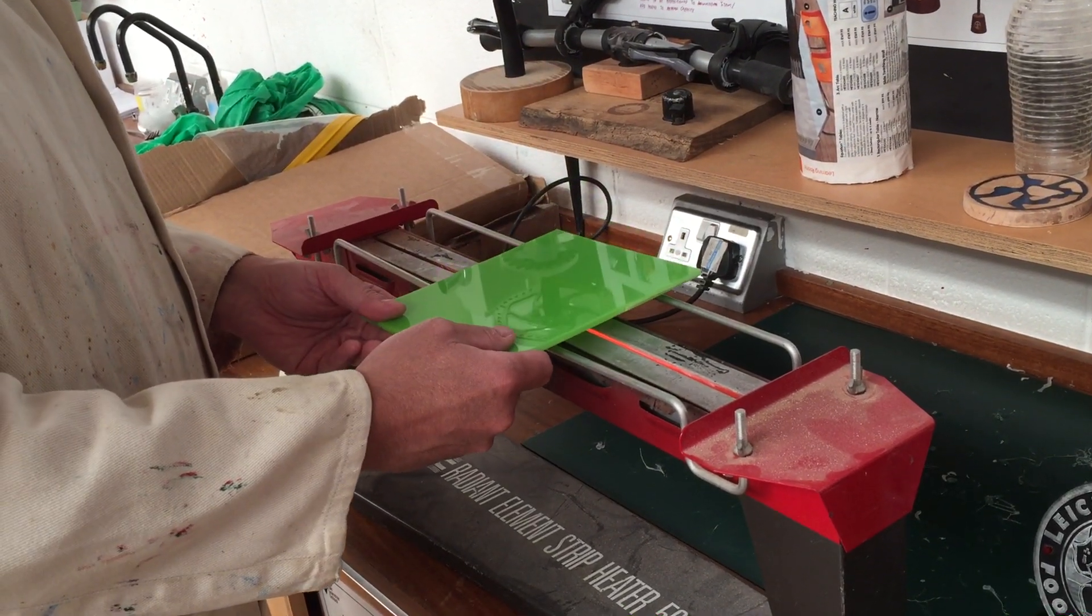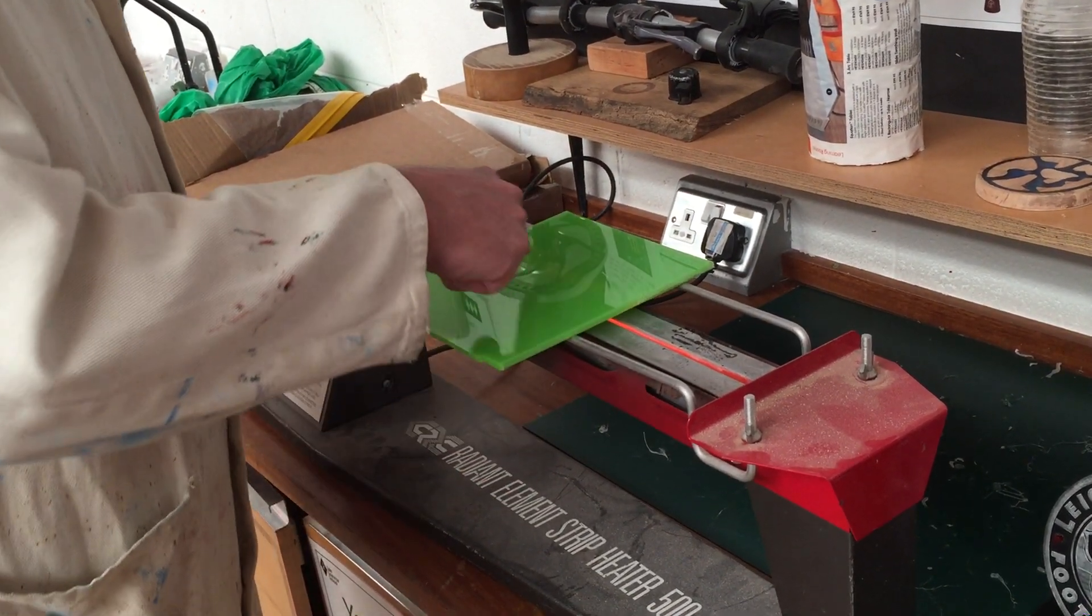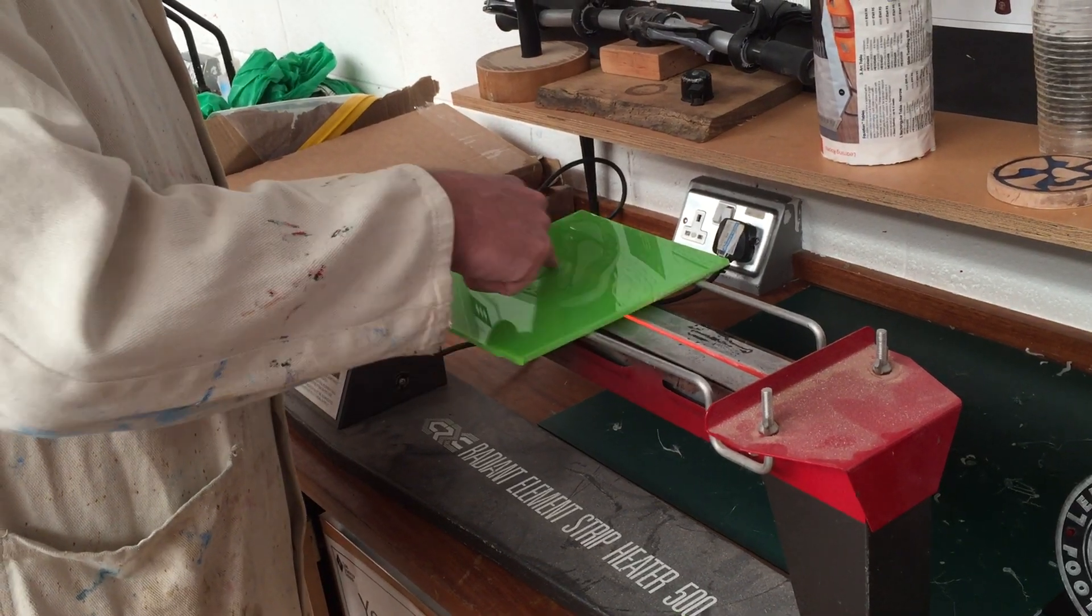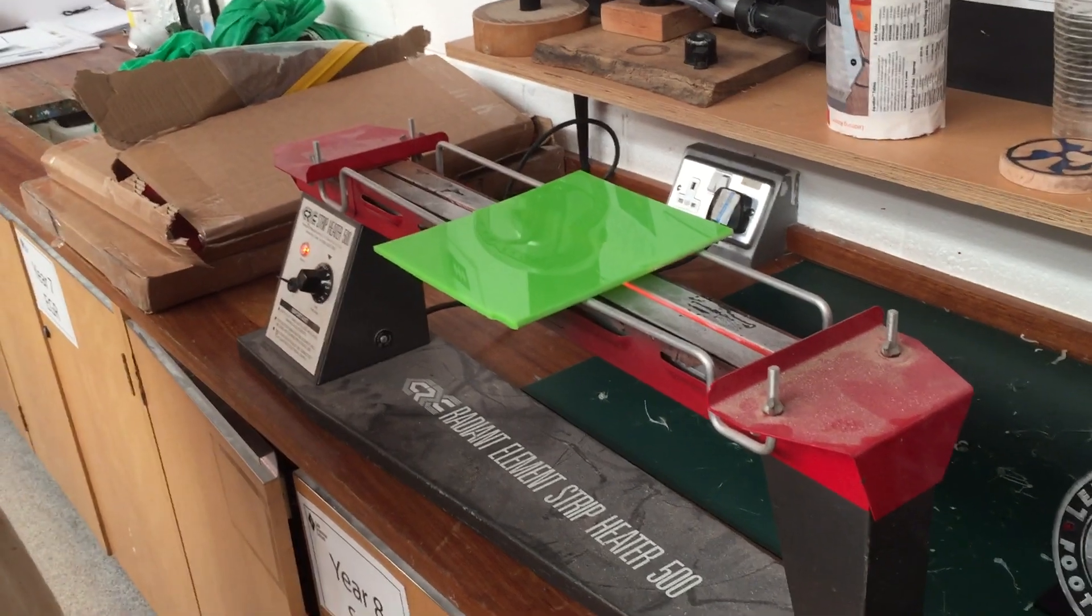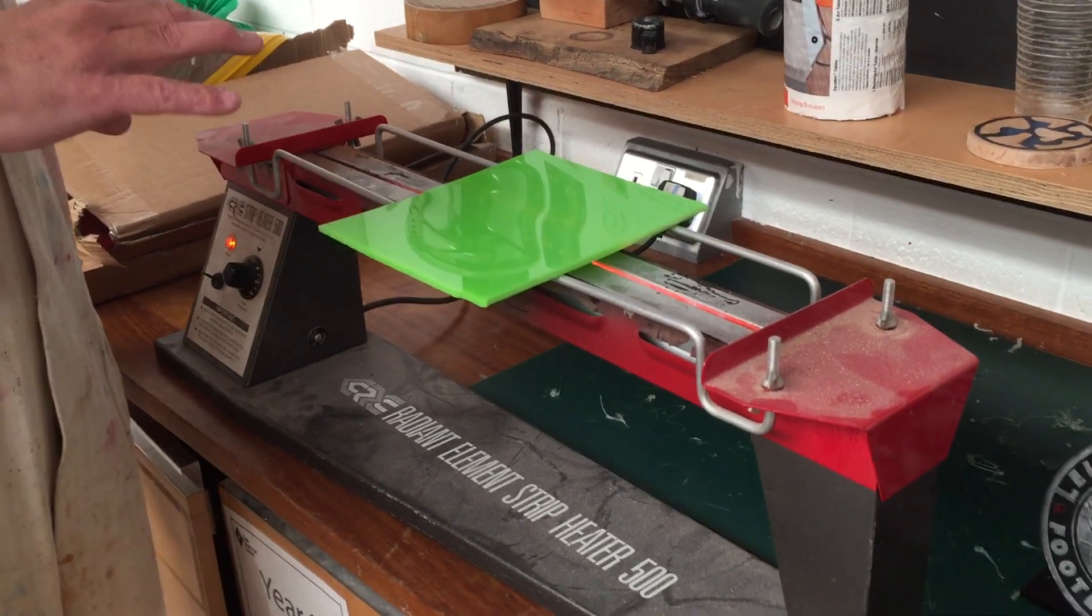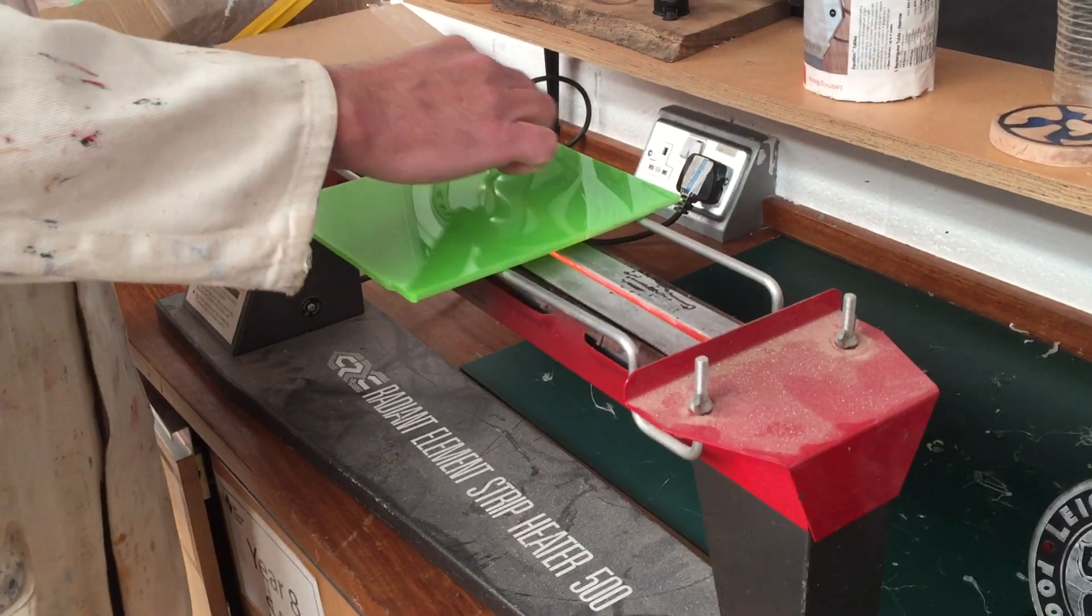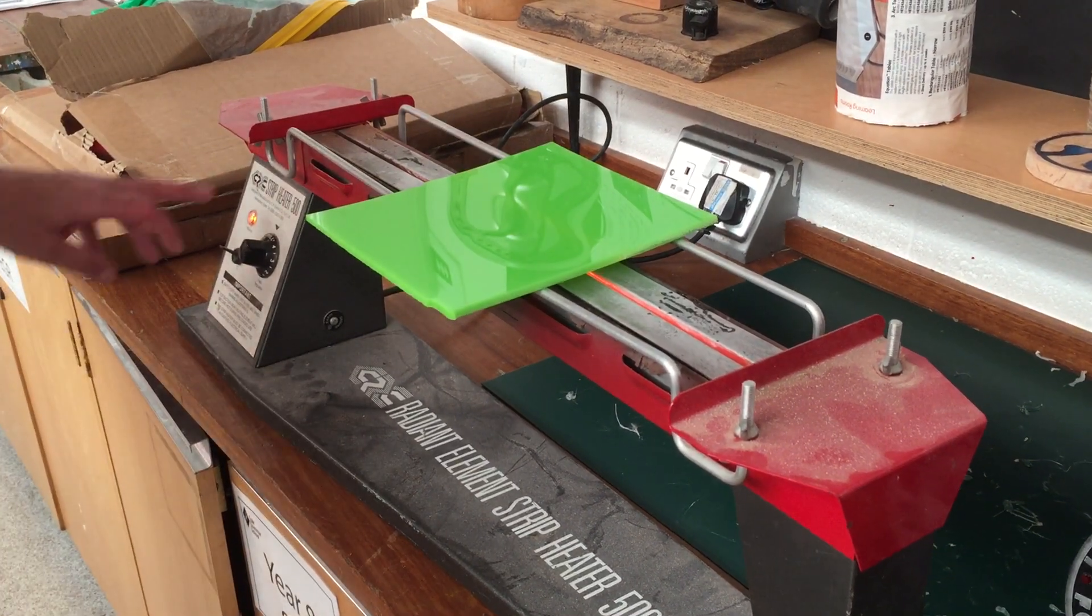Now I can place the acrylic over, and it will heat in this area directly above the element, and it will heat it locally. It won't get hot all over the sheet, just in that strip. So that's where we get the name strip heater.